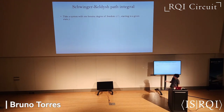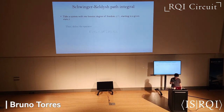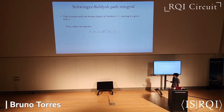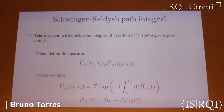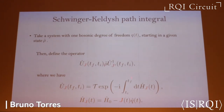Assume the system starts in some state described by an arbitrary density matrix ρ. I define this operator that looks like the adjoint action of some unitary, except that the unitary can be different on each side. Each time evolution operator is defined according to the Hamiltonian of the system with a source term. I have two different sources here — this is why what I define will not just be a density operator, but a useful mathematical construct whose significance you understand later.